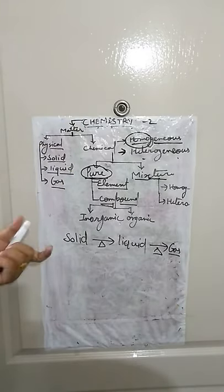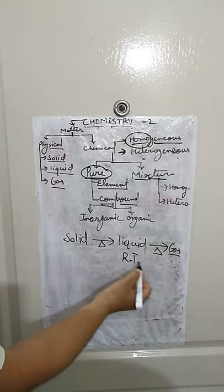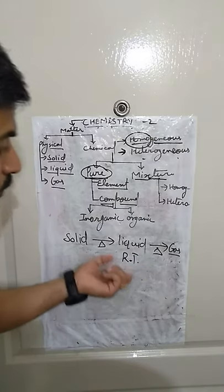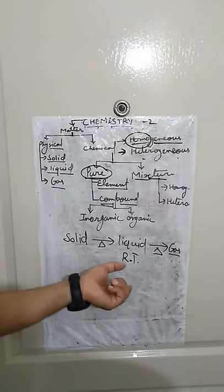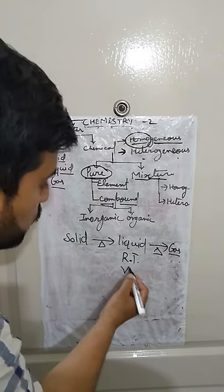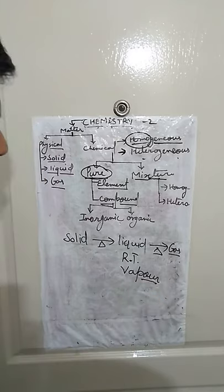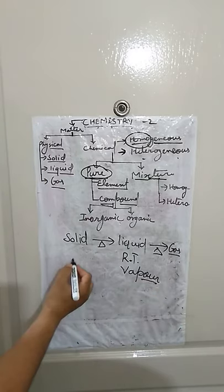If there is a substance that is liquid at room temperature and you convert it to the gaseous form, then you cannot say 'gas' — you say 'vapor.' This is a very important distinction. If a substance exists as a liquid at room temperature and you heat it to get the gaseous form, that gaseous form is called vapor.